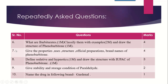Question number 7 again features Phenobarbitone. The question asks for properties, usage, structure, official preparation, and brand names. Every aspect of Phenobarbitone is important. The complete drug Phenobarbitone is important from the exam point of view, carrying 4 marks.